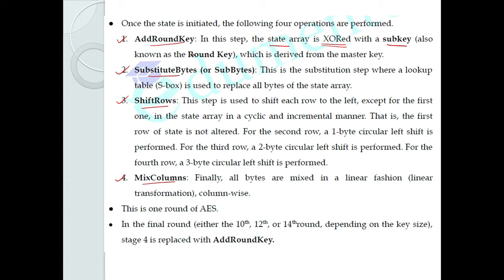The sub-key is also known as the round key. We have three key sizes, and a separate round key is generated for each round through a key expansion algorithm. The round key is a 4x4 array of bytes, same size as the state. We XOR the state with the round key to perform the Add Round Key operation.